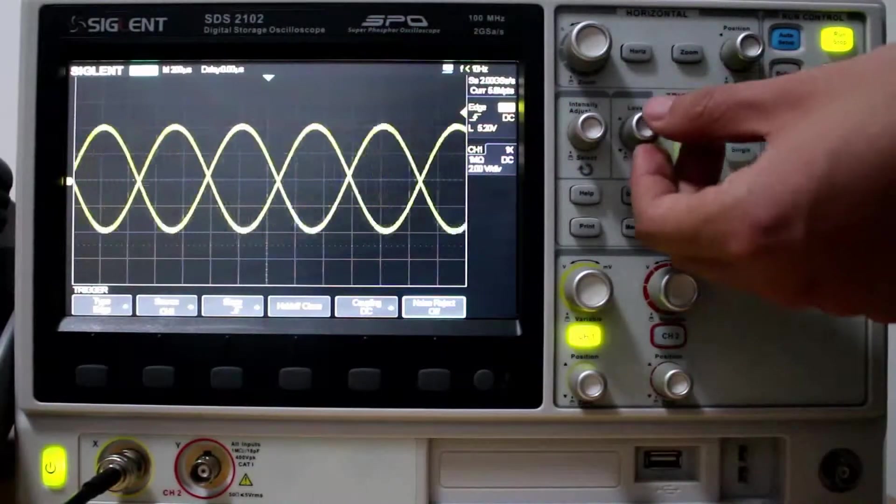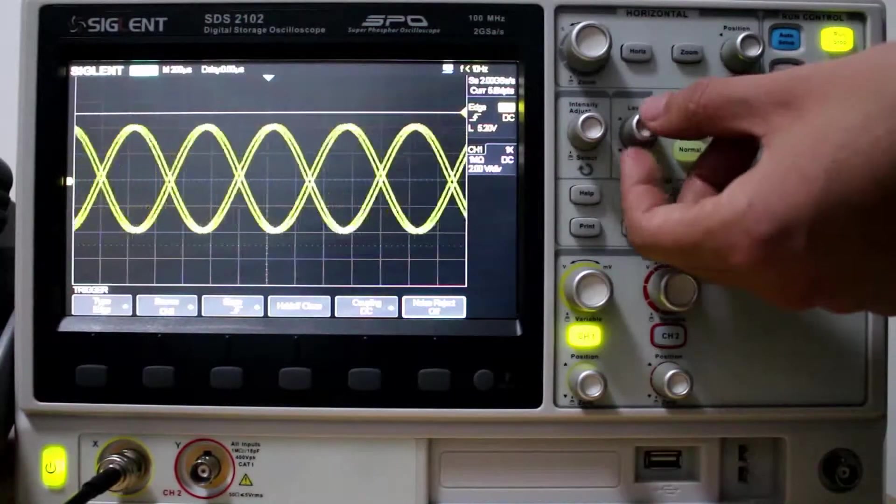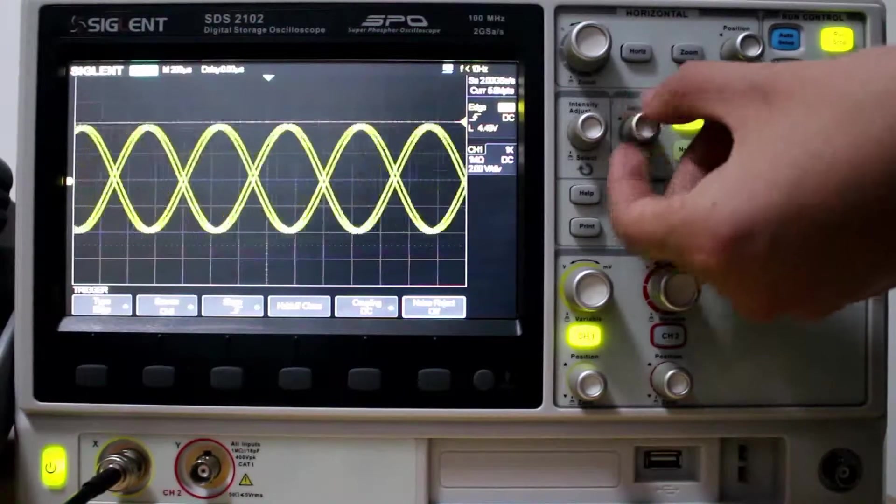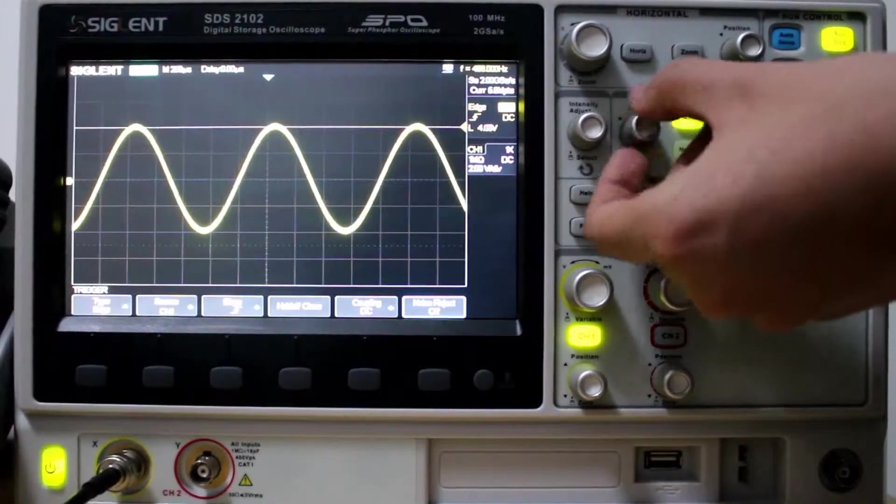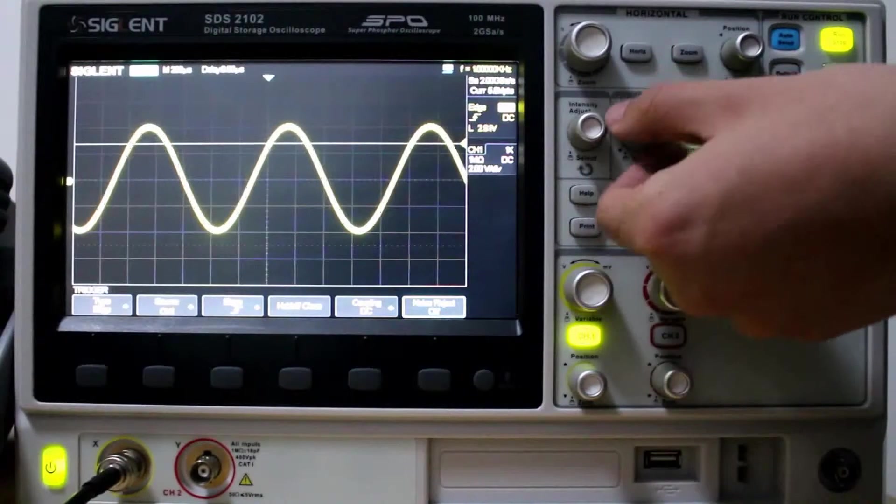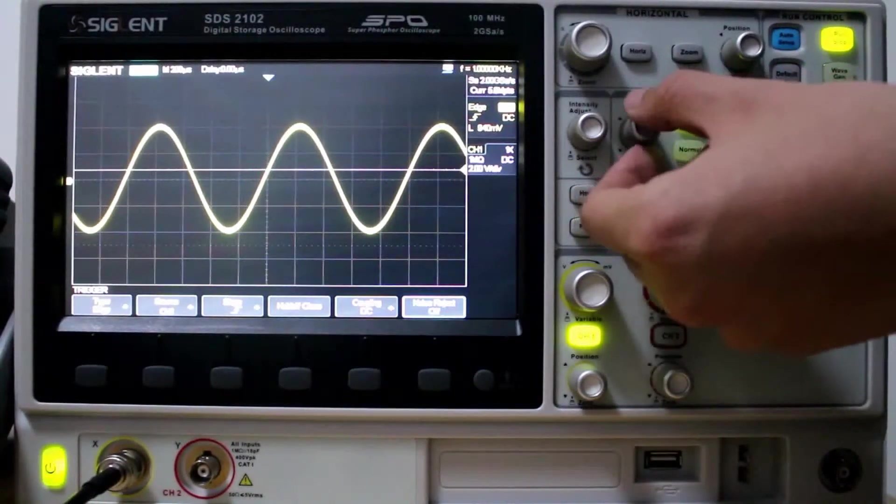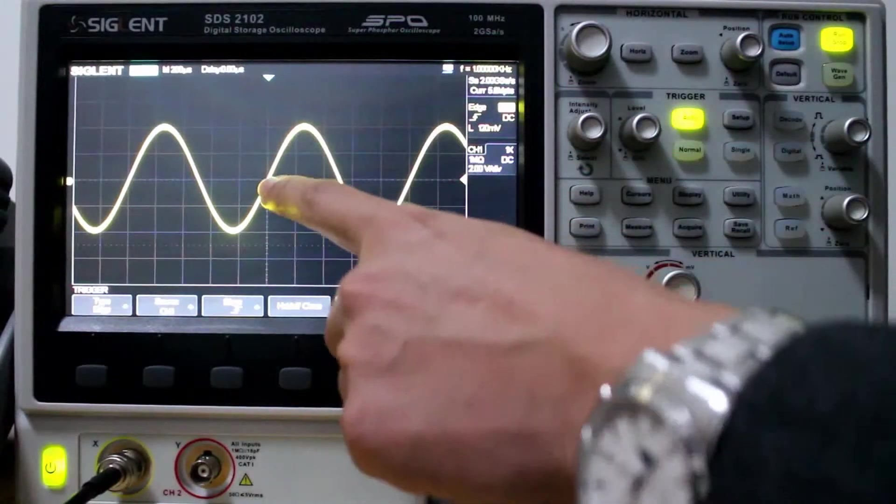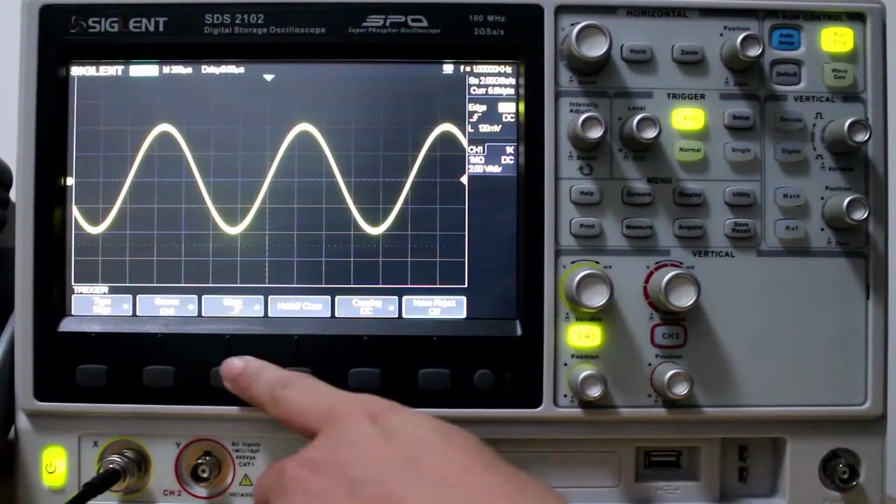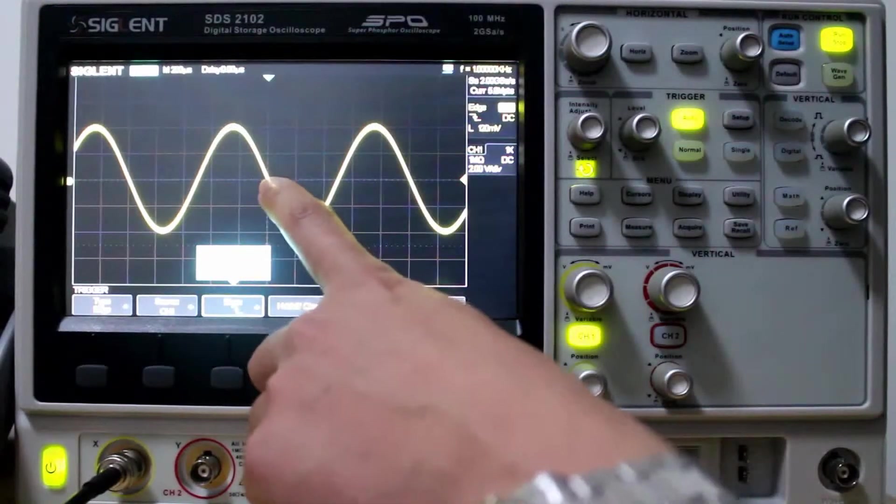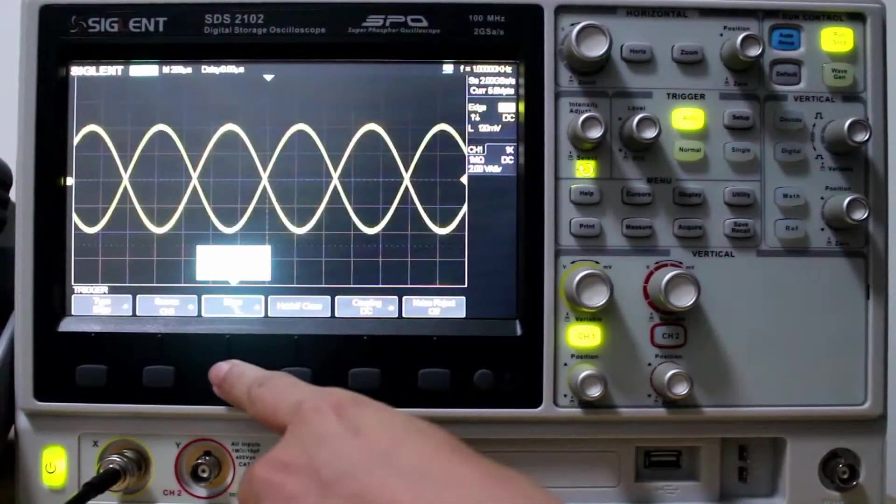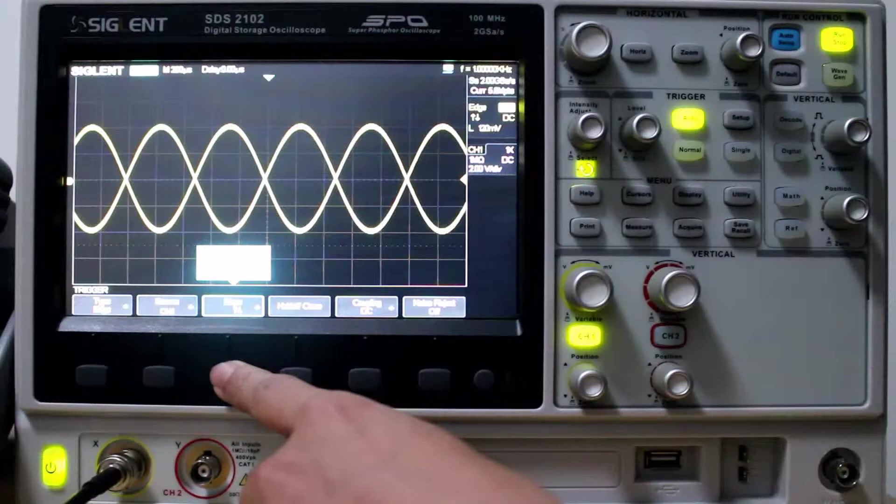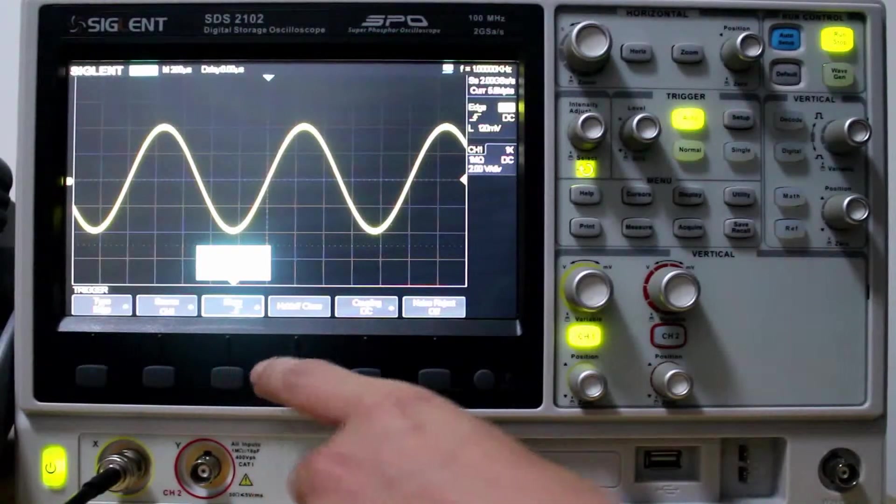So our signal's looking pretty good. We can also adjust the trigger height, trigger level. We can go down there. Now we're triggered. Push the knob, it'll zero out. Now we set it to Falling. Both. Rising, Falling, Rising.